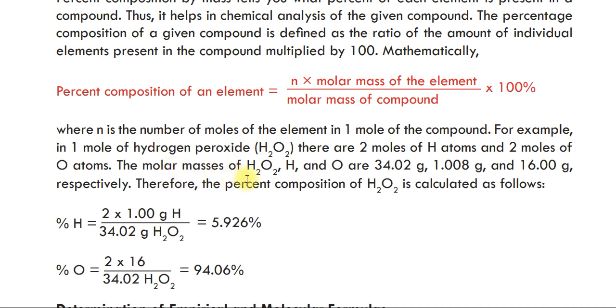The molar mass of hydrogen peroxide is 34.02 grams per mole.